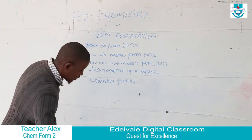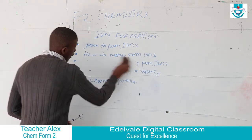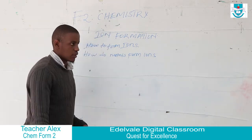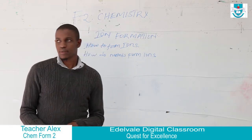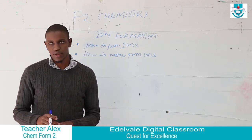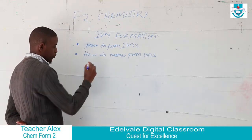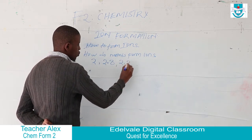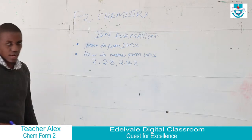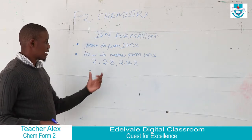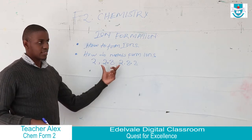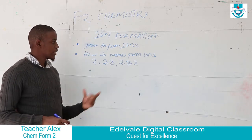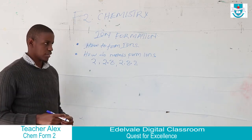How do metals form ions? We form ions by either gaining or losing electrons to achieve a stable configuration. The stable configurations are 2, 2.8, and 2.8.8. Once an atom or ion has this kind of configuration, we consider it stable. Metals form ions to have a stable configuration.